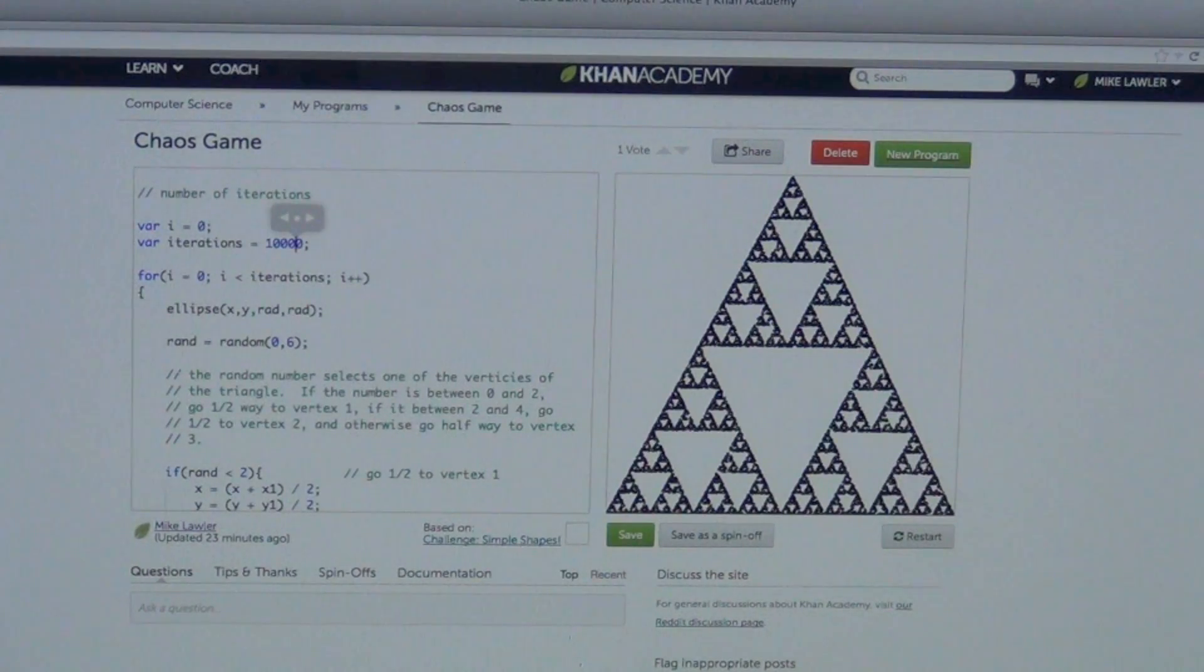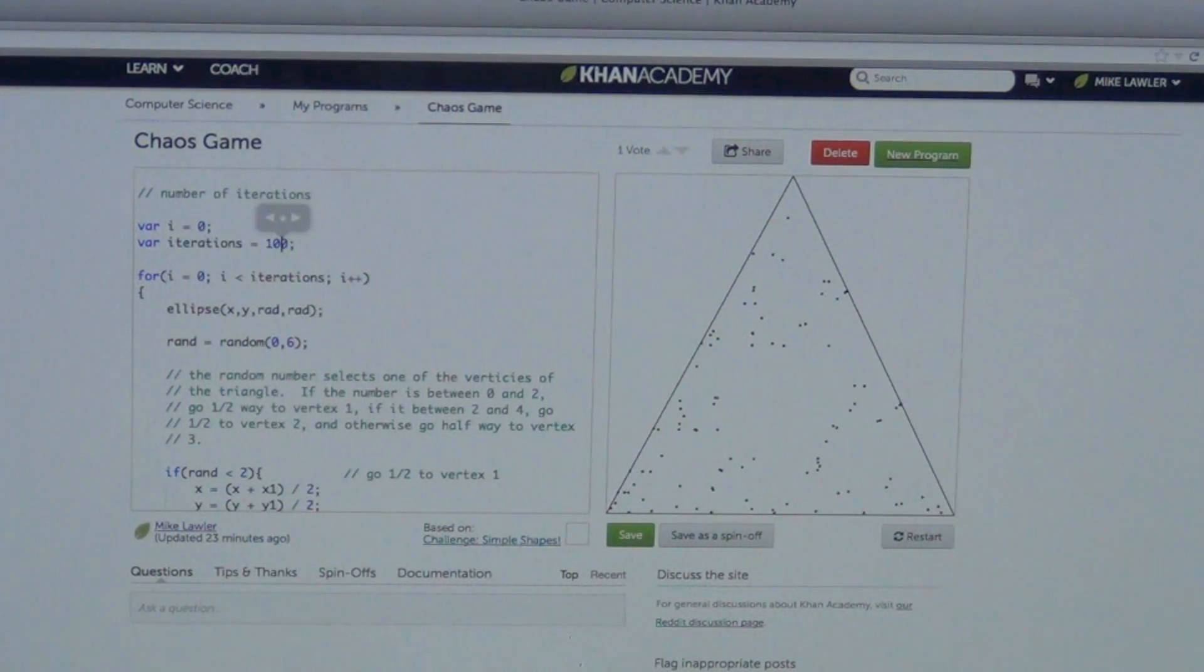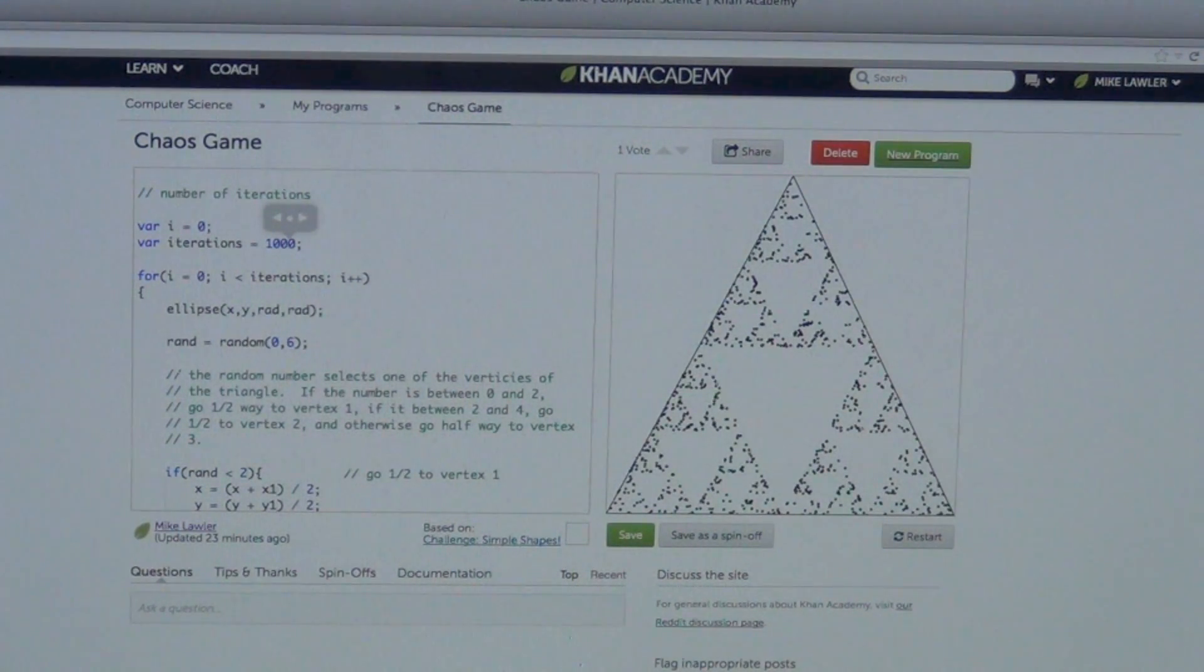What happens if we go to a million? Well, I don't think it can handle it. Oh, man. But even at 100 dots you can't see it. At 1,000 dots you sort of start to be able to see it.